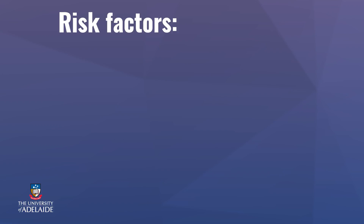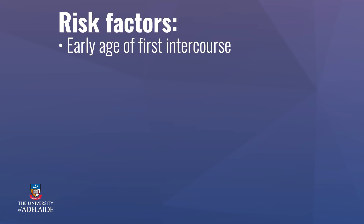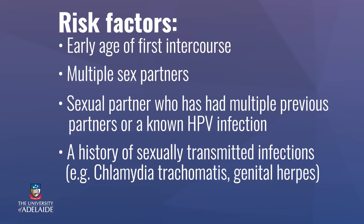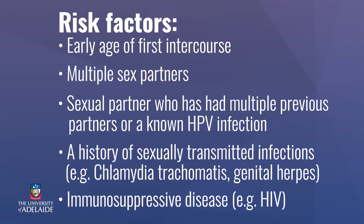Some of the high-risk HPV infections can occur without any symptoms. They may go away within one to two years and do not cause cancer. However, some can persist and cause changes in the cervical lining that could ultimately lead to cancer. The risk factors related to HPV exposure include early age of first intercourse, having multiple sex partners, having a high-risk sexual partner — for example, a partner with multiple sexual partners or known HPV infection — a history of sexually transmitted infections such as chlamydia or genital herpes, and also having a disease like HIV that causes suppression of the immune system.